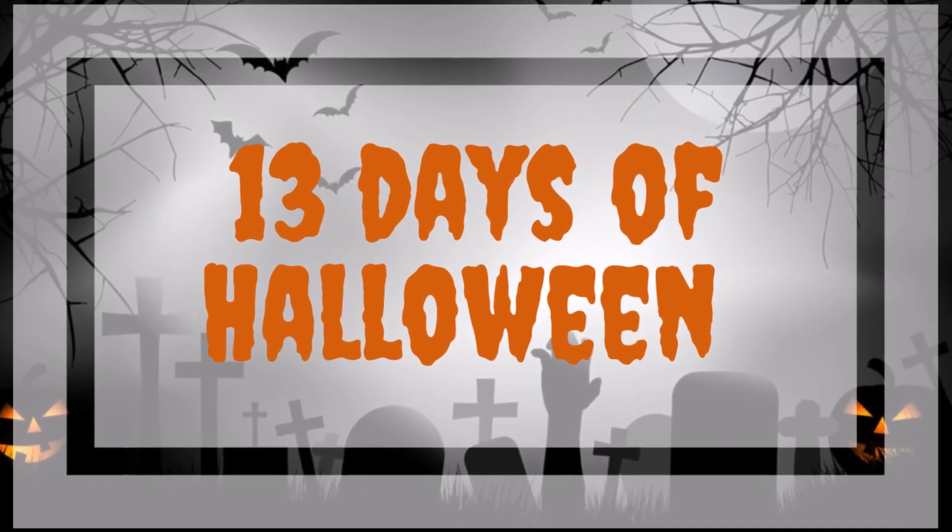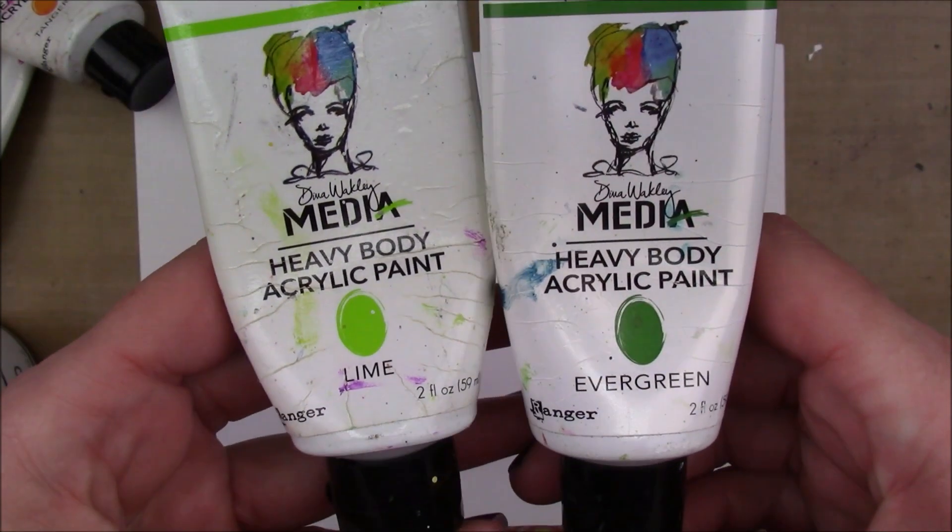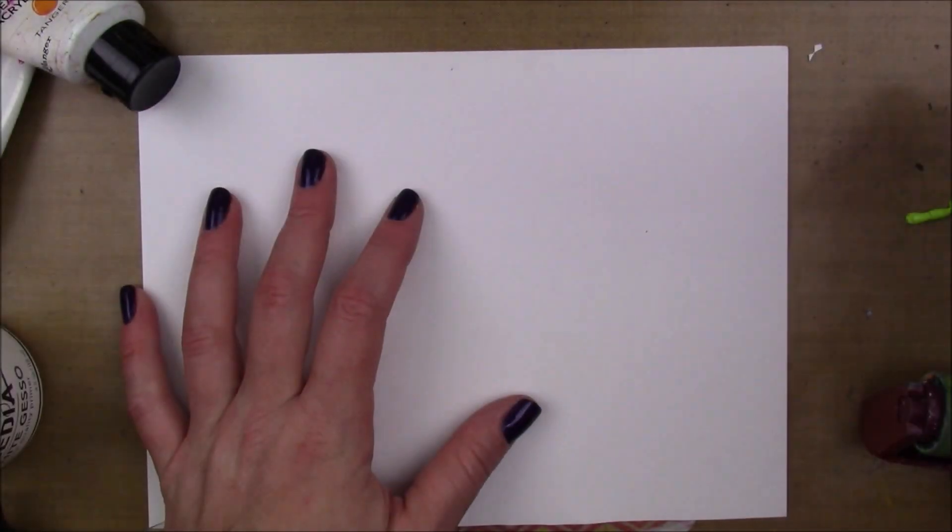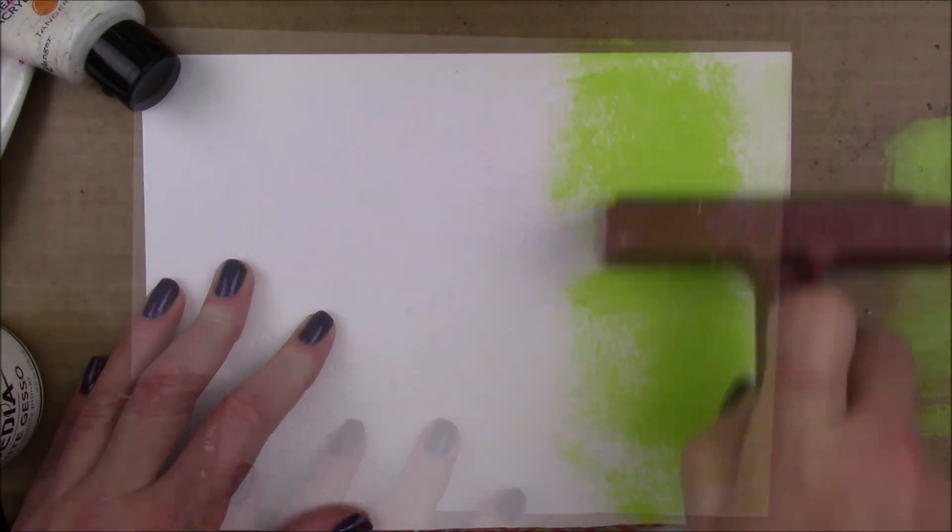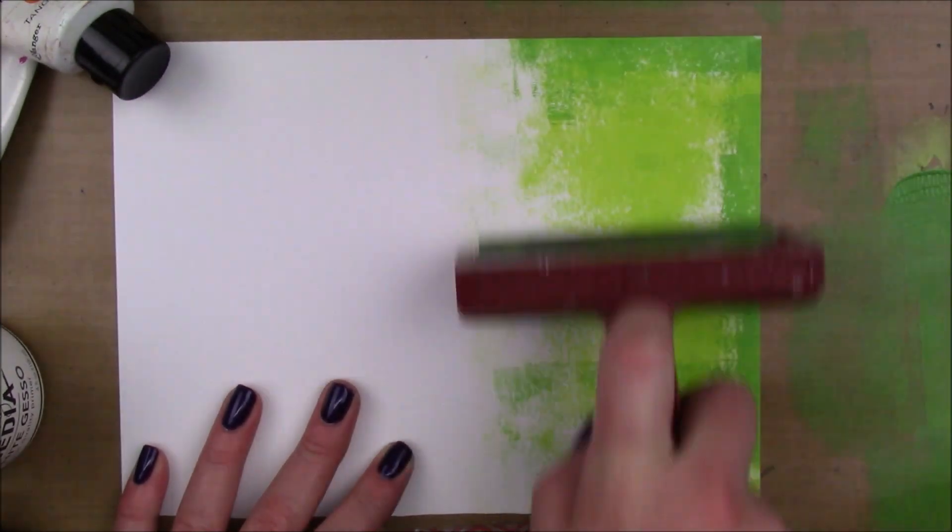Hey guys, day 11 of 13 days of Halloween. We're gonna try to make some artist trading coins today. I'm starting out with some lime and evergreen Dina Wakeley acrylic paint. I'm just gonna apply that to a piece of Bristol smooth cardstock with a brayer, and I'm gonna go in with the lime first and then a little bit less of the evergreen.